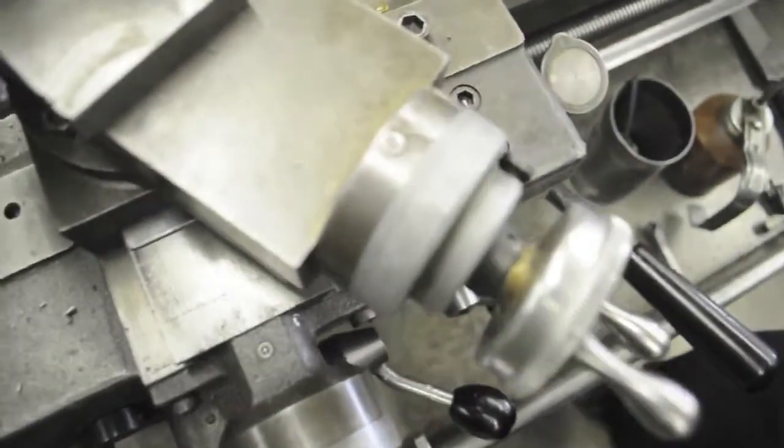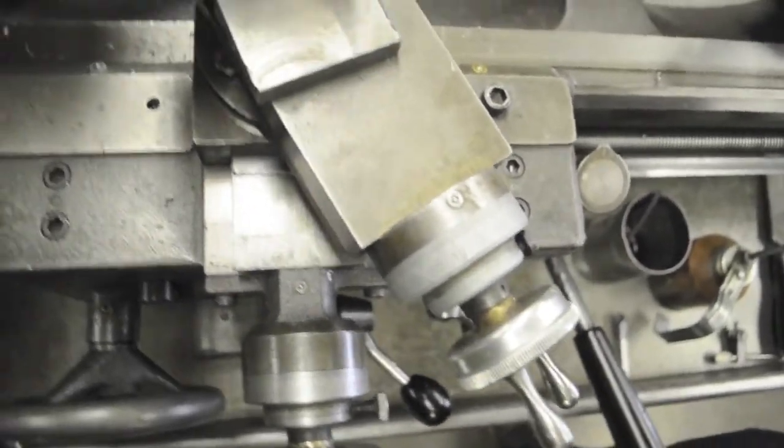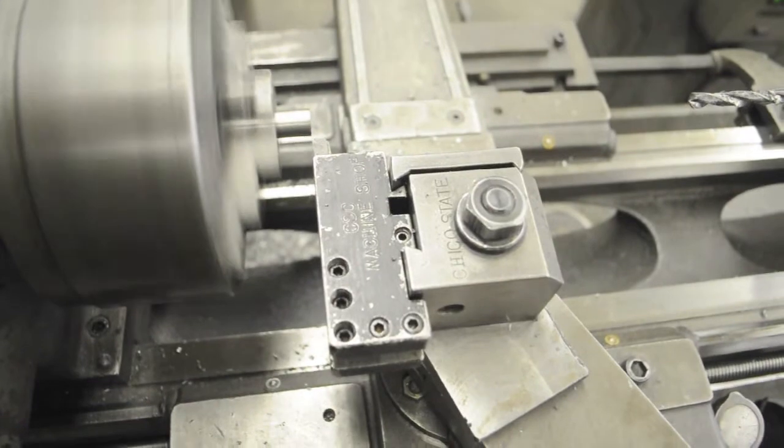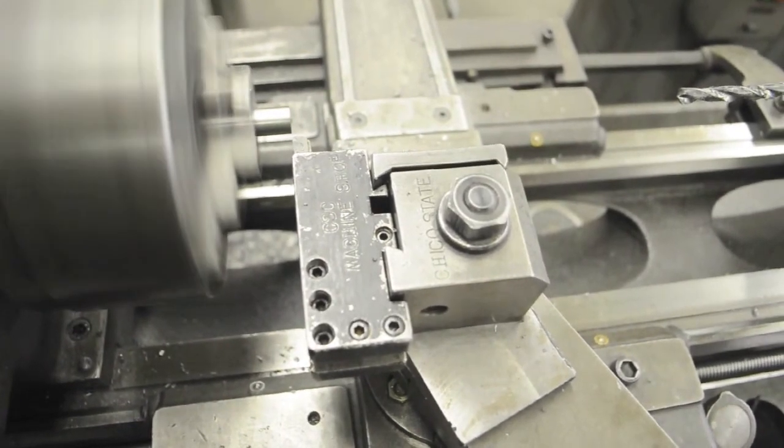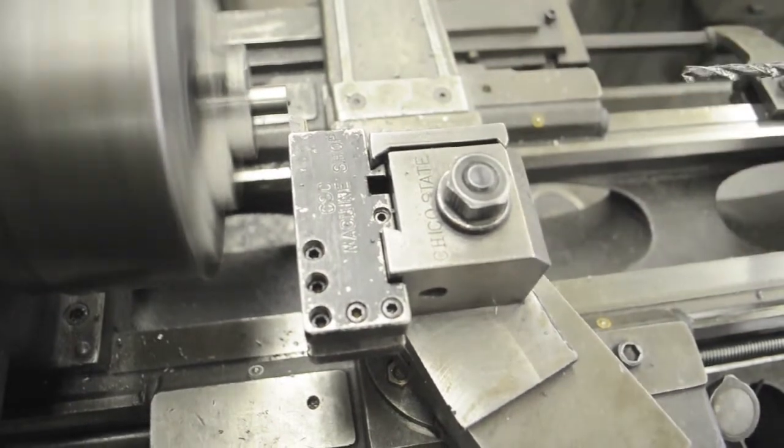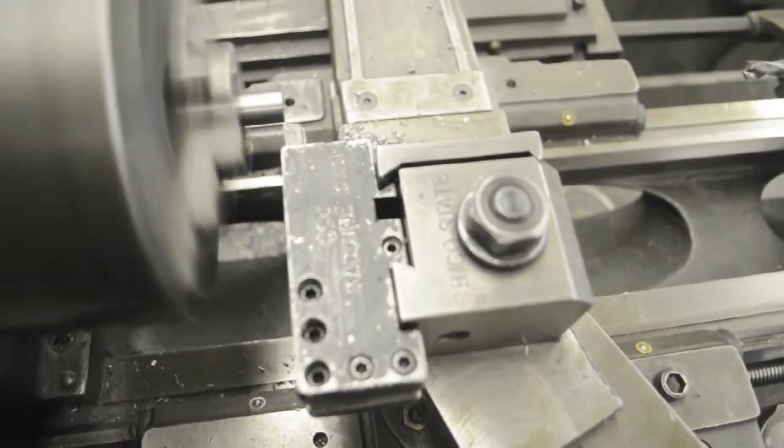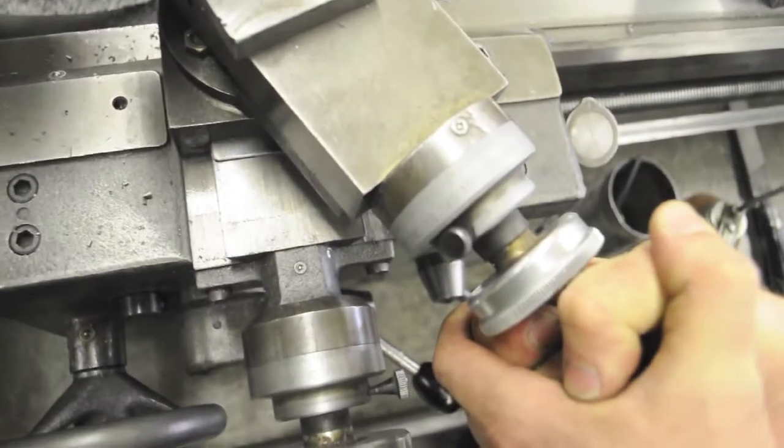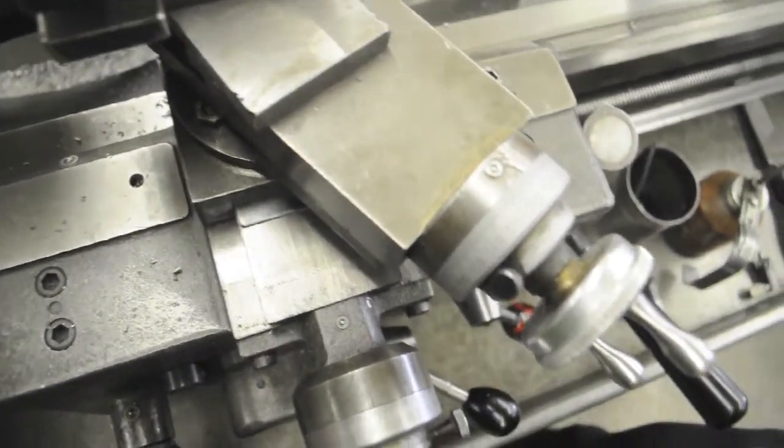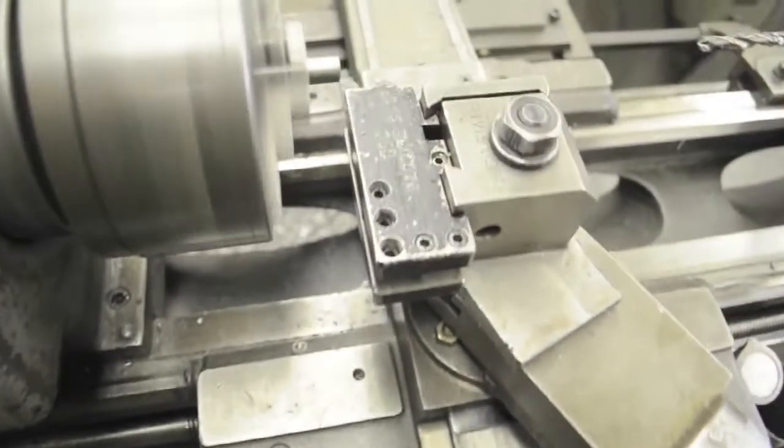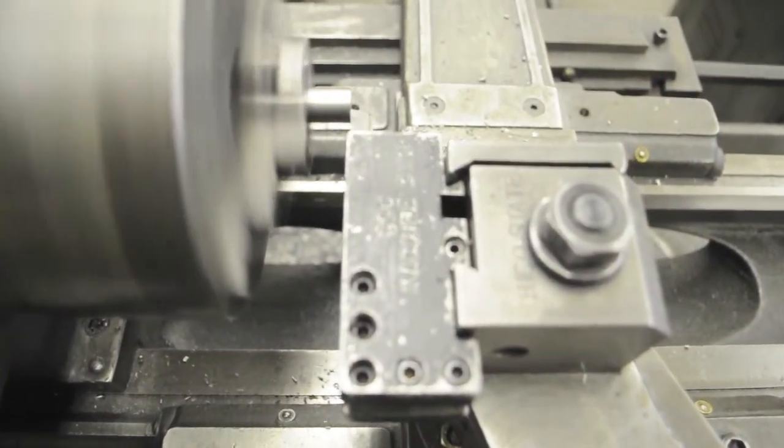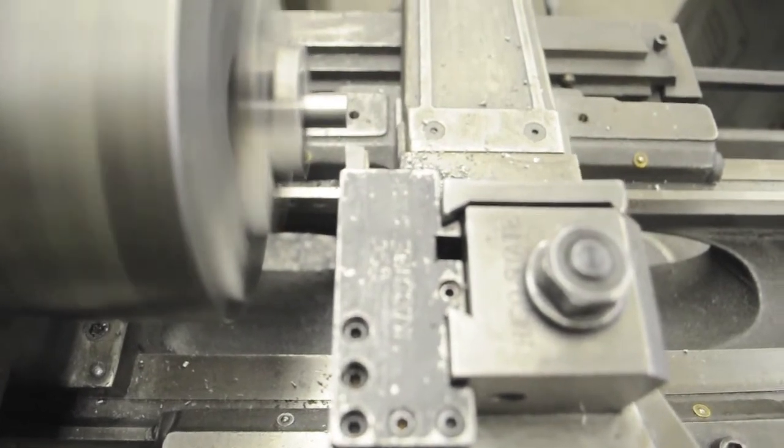Now, we said if we took off 30 thousandths of an inch, we would be at the high limit on the part. So if I turn this 120 thousandths, it'll actually move toward the part 30. So there's 120. That's actually 30 thousandths in the Z direction. Now we'll make a cut. And now I'm going to take it out and measure it again.